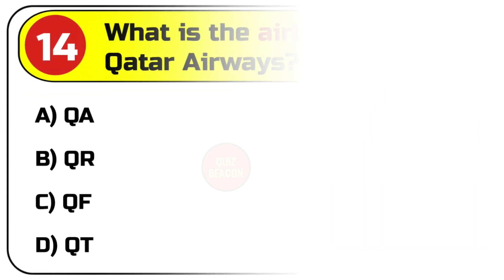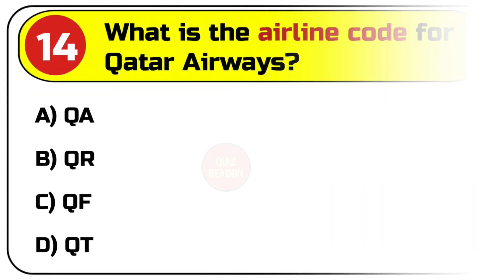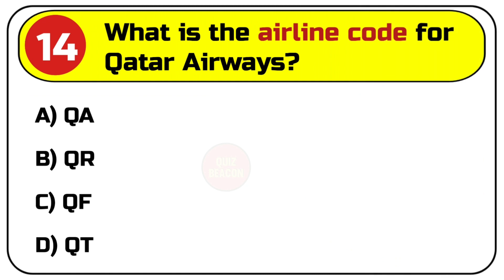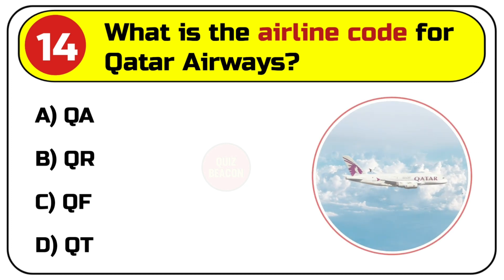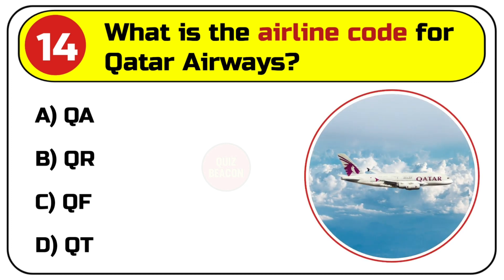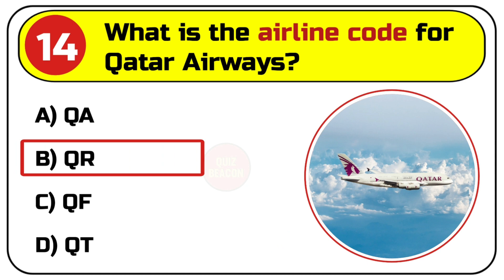Question number fourteen: what is the airline code for Qatar Airways? Options are A. QA, B. QR, C. QF, D. QT. Correct answer is B. QR.